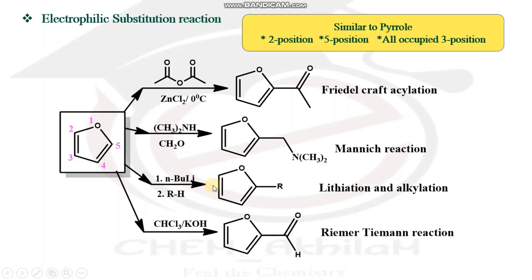The last named reaction is the Reimer-Tiemann reaction, where chloroform and base react to form an aldehyde at position two. When the Reimer-Tiemann reaction is conducted with pyrrole, substitution also occurs at position two but a ring-expansion byproduct also forms. With furan, no such byproduct is formed — only the position-two substituted product is obtained directly.